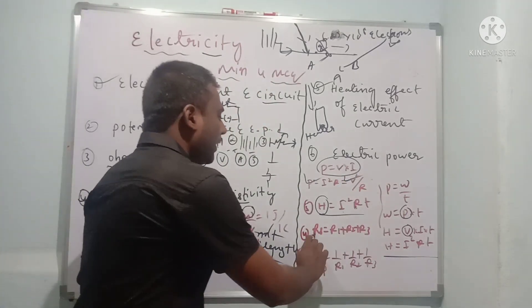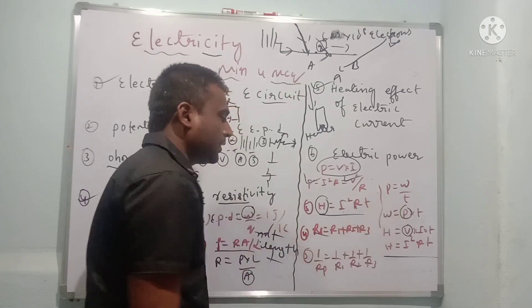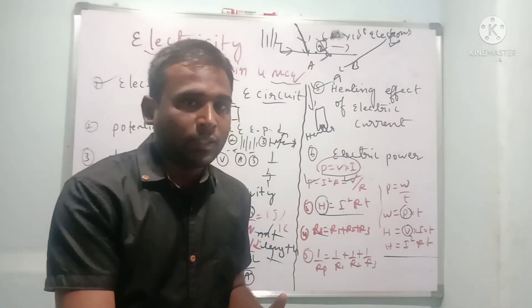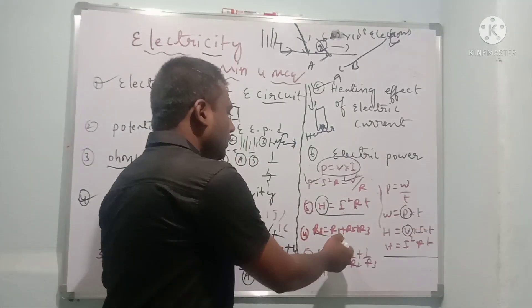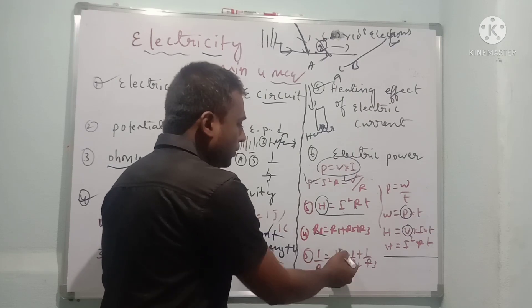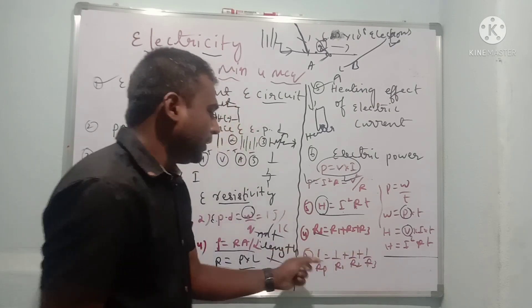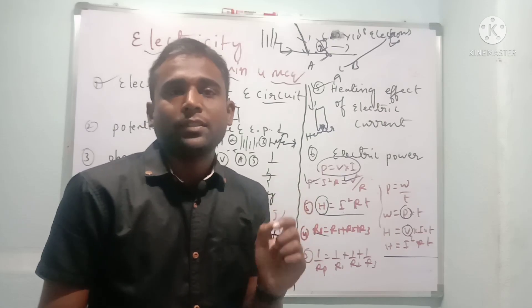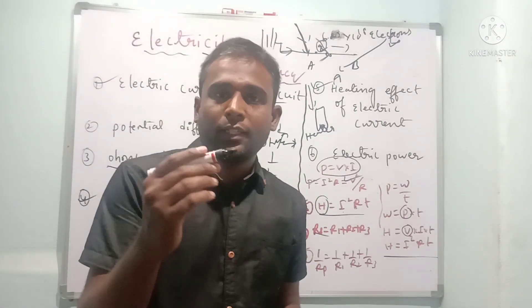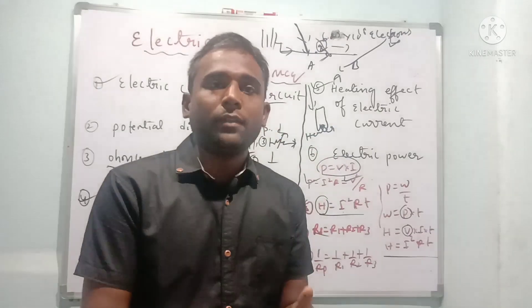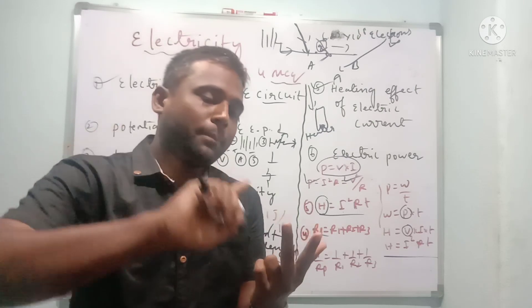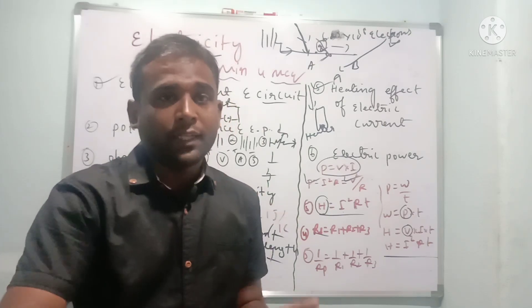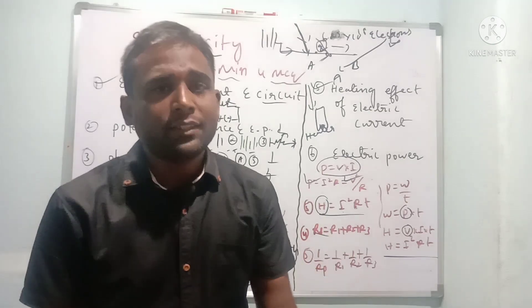When resistors are connected in series, the equivalent resistance is R = R1 + R2 + R3, giving more total resistance. When resistors are connected in parallel, 1/Rp = 1/R1 + 1/R2 + 1/R3, giving minimum resistance. The advantage of parallel connection is that it avoids short circuit, allows current to pass to many devices independently, and there is no effect of short circuit on other branches.